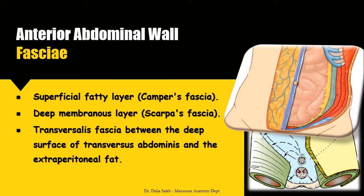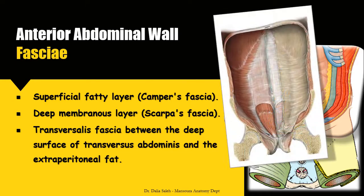Another fascia present in the anterior abdominal wall is the transversalis fascia, which lies between the deep surface of the transversus abdominis muscle and the extraperitoneal fat. This fascia is continuous above with the infradiaphragmatic fascia, backwards with the fascia covering the iliacus and psoas major muscles, below with the pelvic fascia, and below the level of the arcuate line — which lies midway between the umbilicus and the symphysis pubis — the fascia transversalis is the only support for the posterior surface of the rectus abdominis, forming the posterior rectus sheath. It also contains the deep inguinal ring and gives the internal spermatic fascia surrounding the spermatic cord.